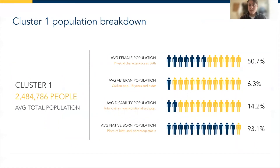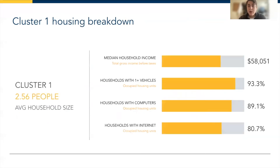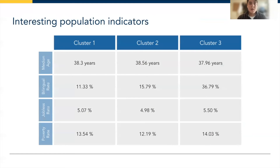The data analysis included detailed population breakdowns. Cluster one has a really high native-born population. Cluster two has a sizable percentage of the population with disabilities. Cluster three has the largest total population. We did similar analyses for housing situations: cluster one has the smallest median household income, cluster two has really high percentages of households with vehicles, and cluster three contains the most households with computers. We also looked at population indicators across all clusters — median age, bilingual rate, and jobless and poverty rates. Cluster two tends to have the lowest jobless and poverty rates, and cluster three has the youngest median age and largest bilingual rates.